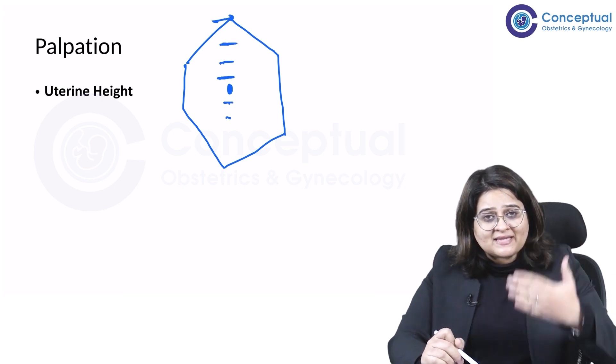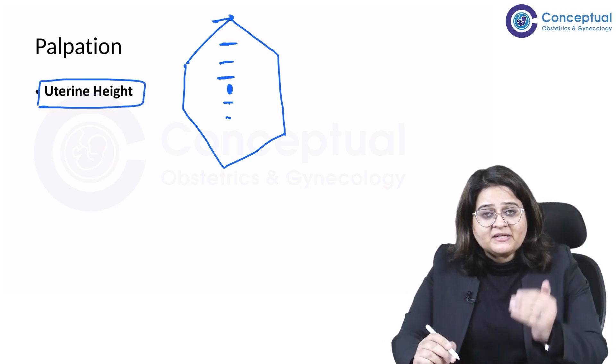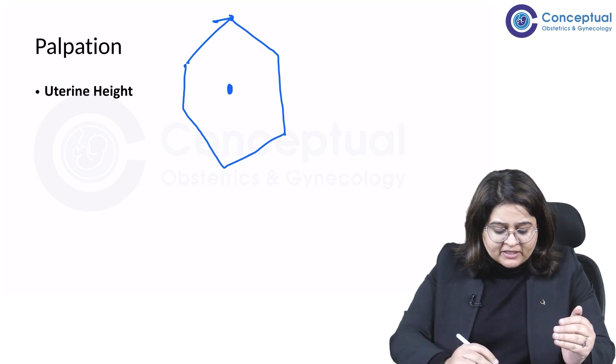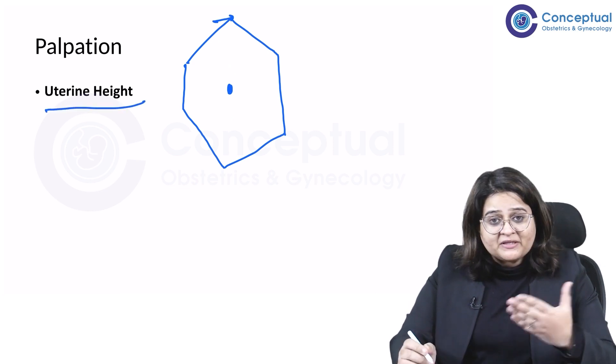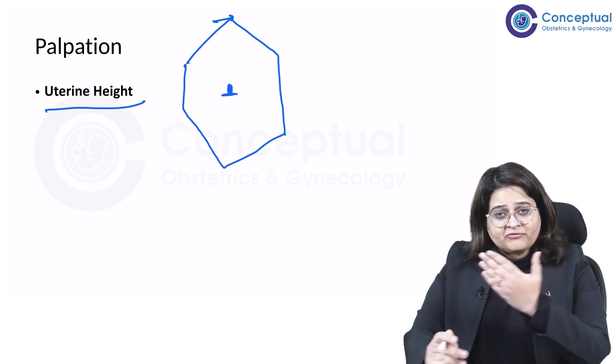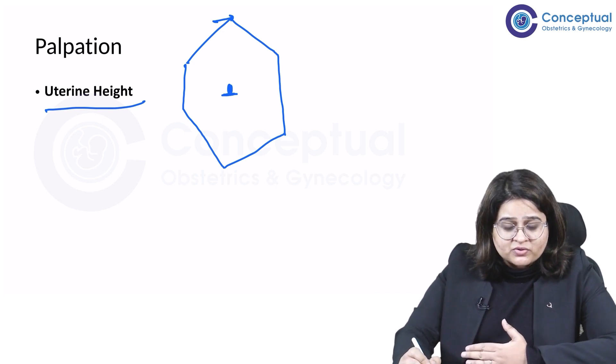Wherever you feel resistance, that point is the uterine height, and we have some predefined areas which are described and which I will be telling you. So for example, if the uterine height is here, where you're first feeling resistance, this is a 20-week size uterus.